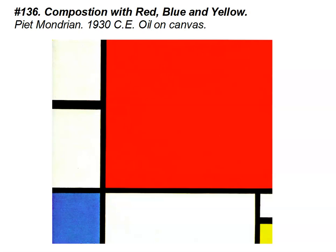Welcome to a new day of AP Art History. This is going to cover numbers 136, 137, 138, 139, and 140. We are getting into the 1930s and 40s art in a more abstract way, looking at modernism and abstract art as we move forward.